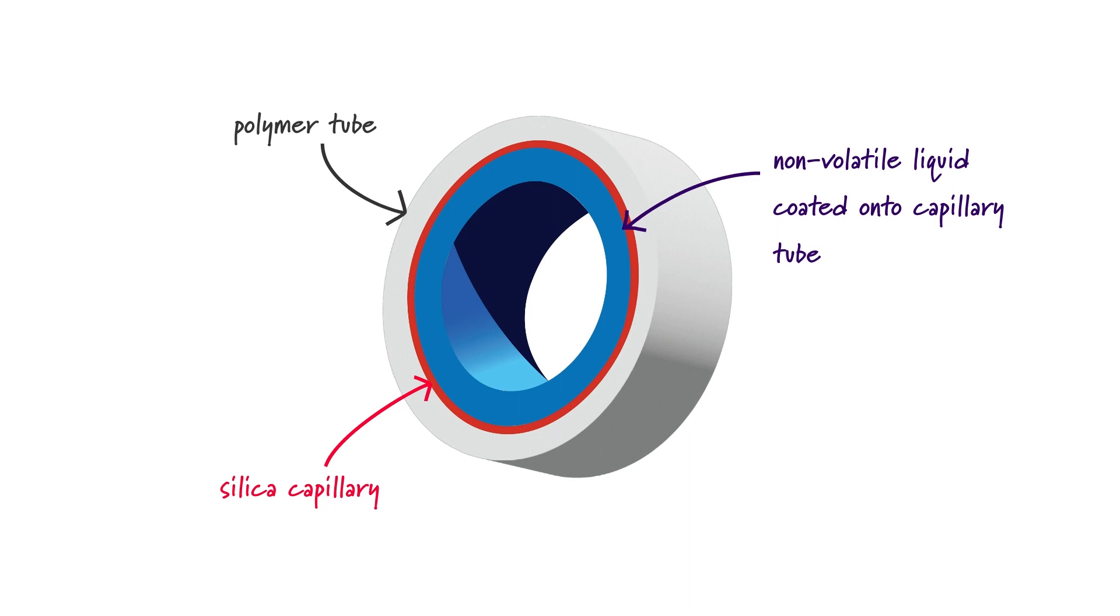This liquid, i.e. the liquid that's making up the stationary phase, has got to be stable and non-volatile. We don't want it to vanish with the carrier gas as it flows past.